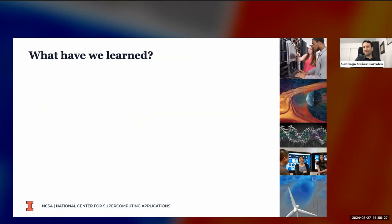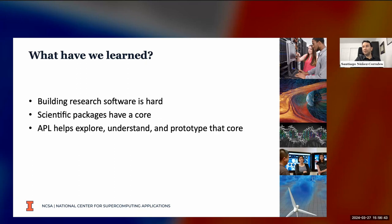To finalize, what have we learned? That building research software is hard. Yes, it combines doing science and doing computing. We also learned that scientific packages have a core. That core maybe is a mathematical part that we need to understand really well. APL helps us explore, understand, and prototype that core. This is a value proposition that to me has become much more evident as time passes. Finally, like in the case of quantum, APL code becomes your code. Thank you very much and I'll remain open for questions.